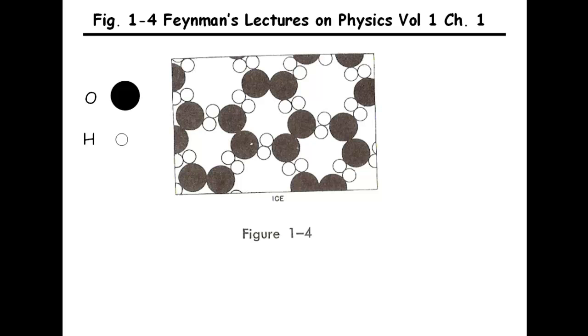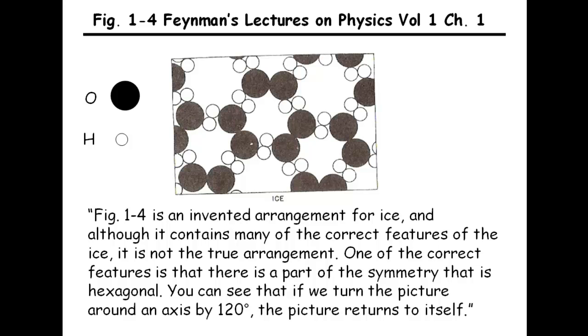The large dark circles represent oxygen atoms, the small white ones hydrogen. Let us read the original text. Feynman says, figure 1-4 is an invented arrangement for ice, and although it contains many of the correct features of the ice, it is not the true arrangement.